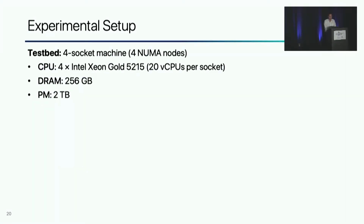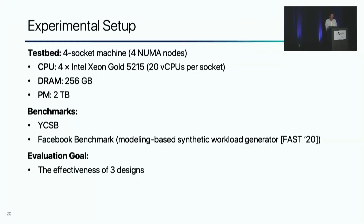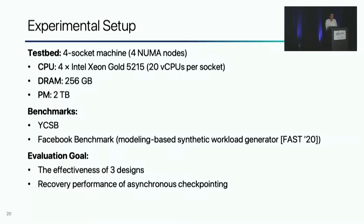We evaluate NUMA-aware braided skiplist on a NUMA-node machine with 2TB persistent memory. For benchmark tools, we use YCSB and Facebook Benchmark. We evaluate the effectiveness of our three novel designs and the recovery performance of ListDB.